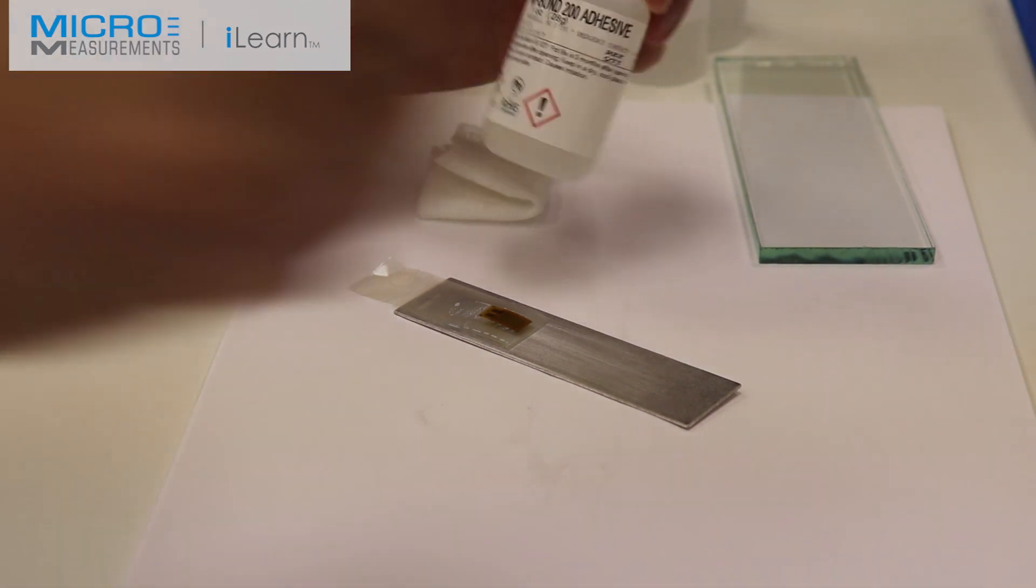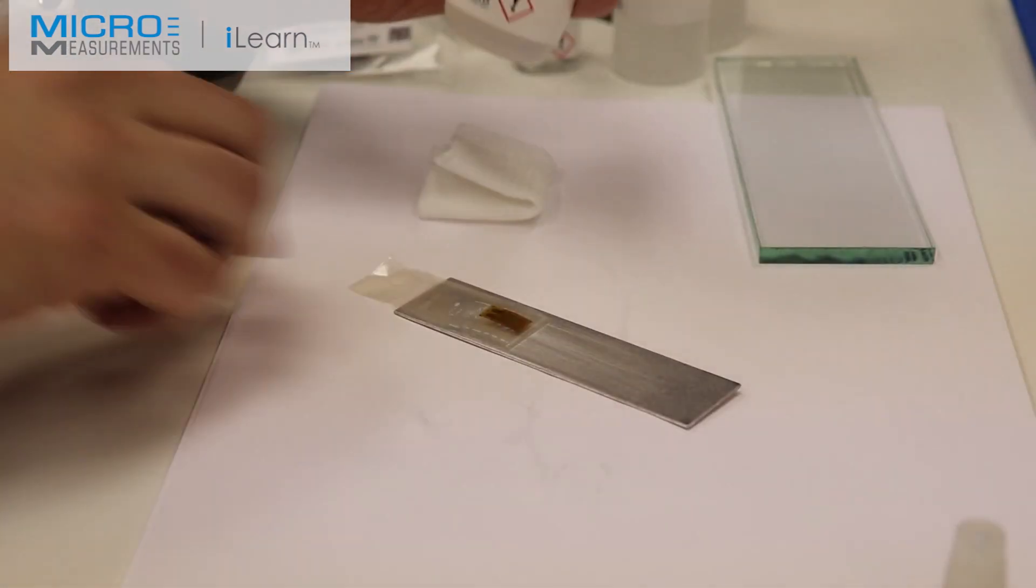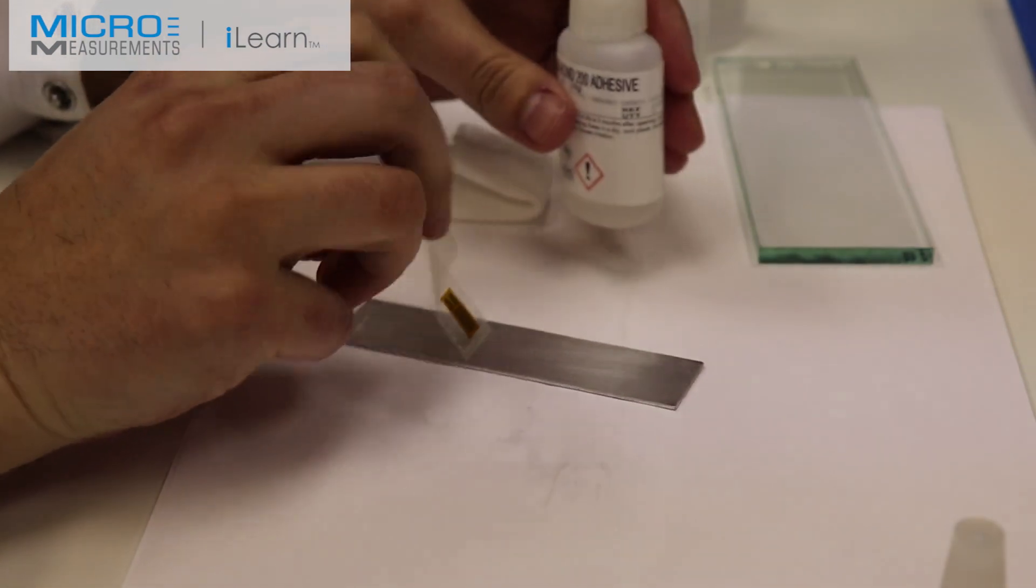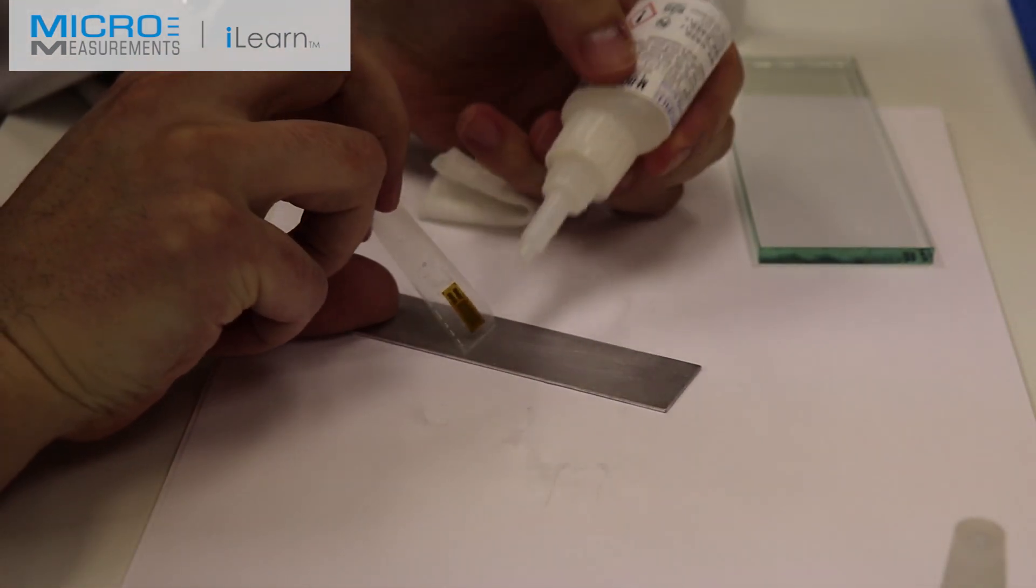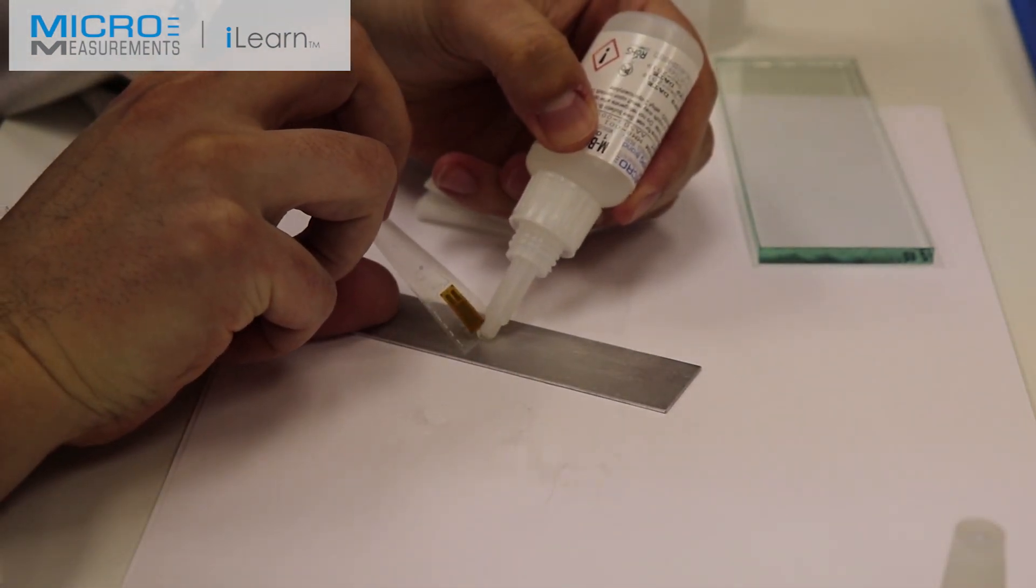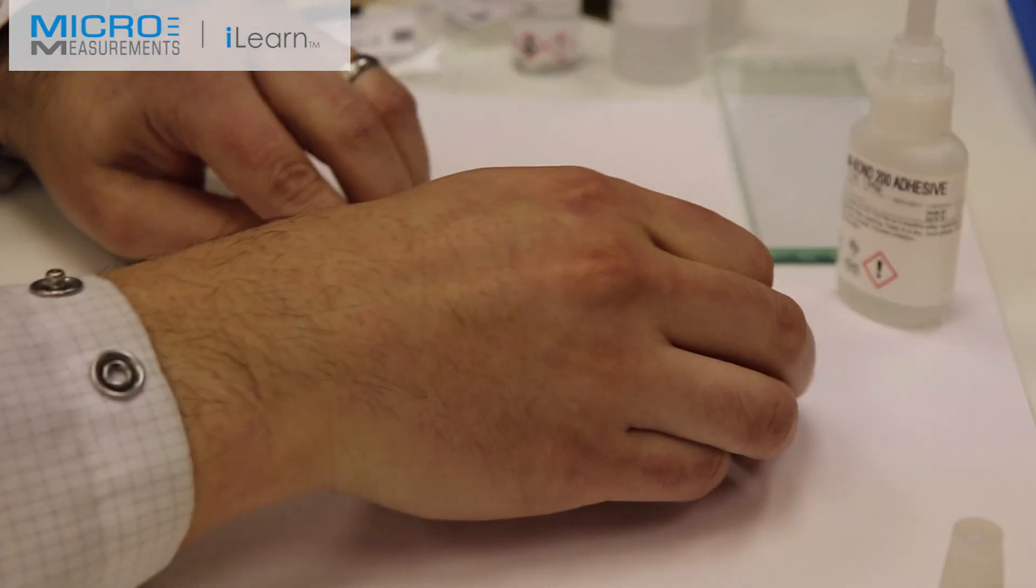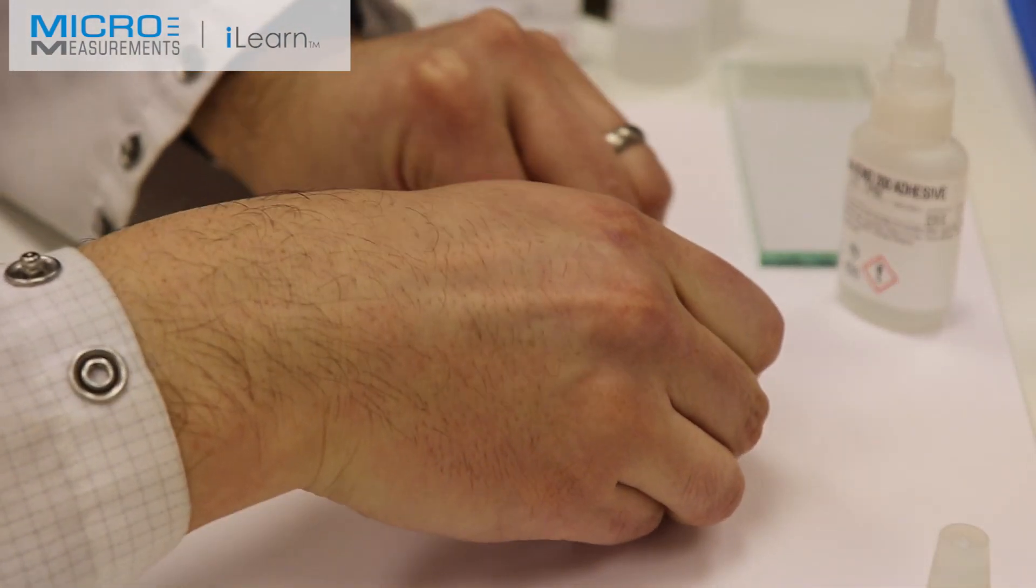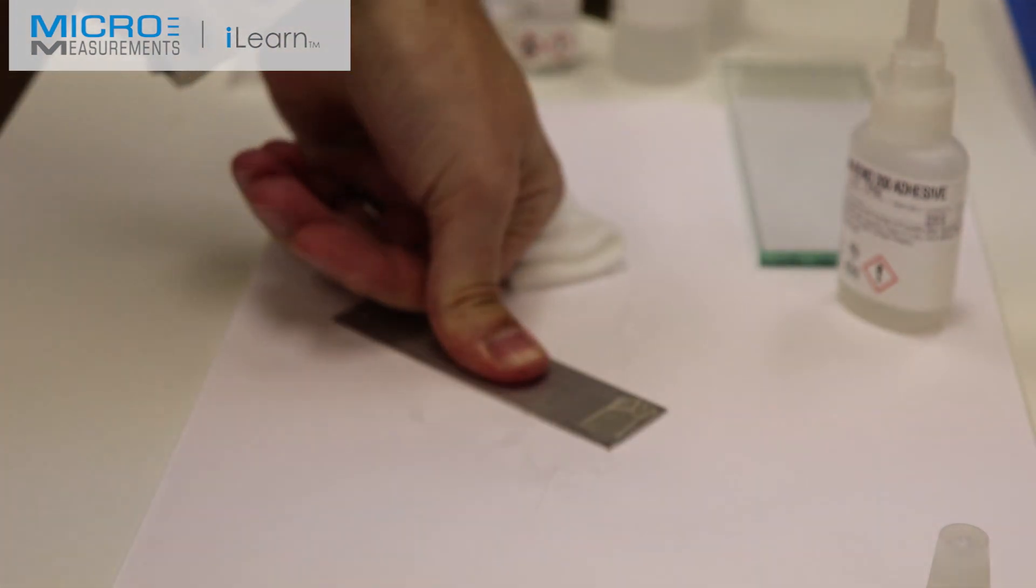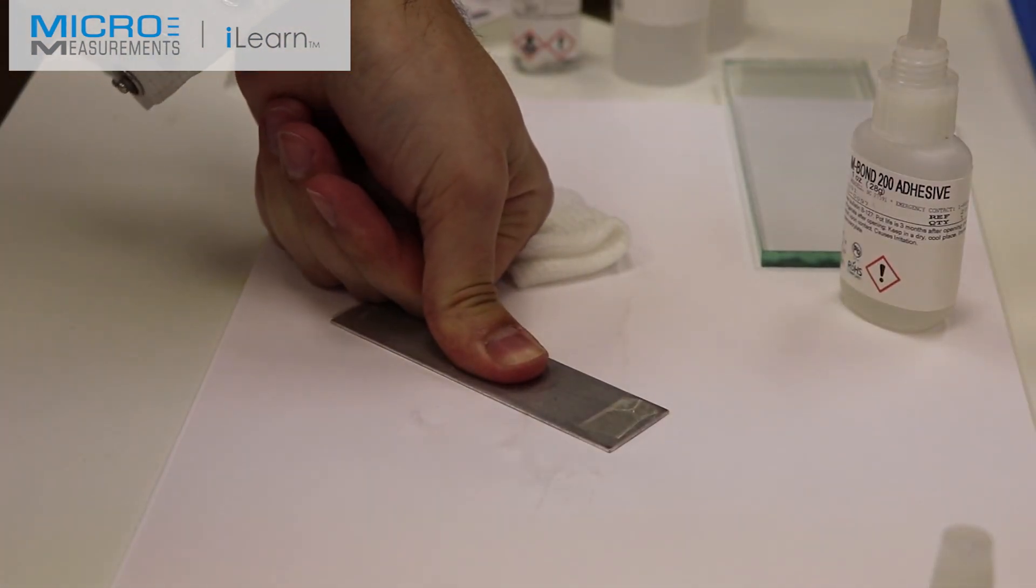Colin's going to take a single drop of the M-Bond 200, place it at the cusp of where the tape and the beam come together. A gauze sponge folded into quarters, and he's going to squeegee through there. And then follow with his thumb. We're going to have one minute of thumb pressure.